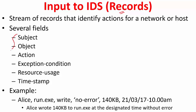a record can have many fields: subject, object, action, exception, condition, resource usage, timestamp, and so on. For example, this is a record which says Alice is the subject. She accessed the object run.exe and she wrote into it. No error happened — that is the exception condition. This resource was 140 kilobytes and she accessed it on this date at this time. So that is what this record is telling.